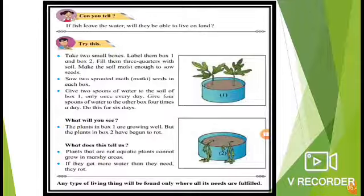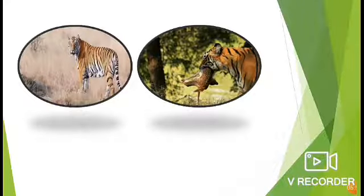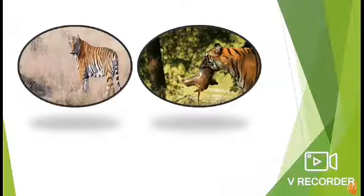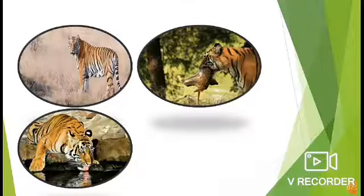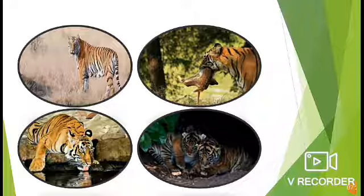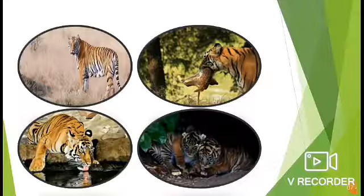Now let's take the example of the tiger. The tiger lives in the forest. It has stripes and hides among the tall grasses. Its prey are animals like deer, nilgai and bison. Prey means the animal on which the tiger feeds. Its prey cannot spot the tiger in the tall grass, so the hungry tiger attacks and feeds on them. The tiger inhabits areas where there is a water hole, hills or mountains, so that it can find a cave for shelter. We conclude that any type of living thing is found in the area where its needs are fulfilled. Children, just imagine — if the tiger comes to the city, will it be able to survive?